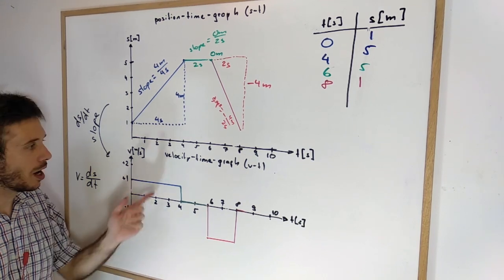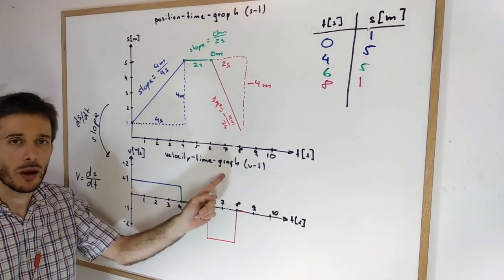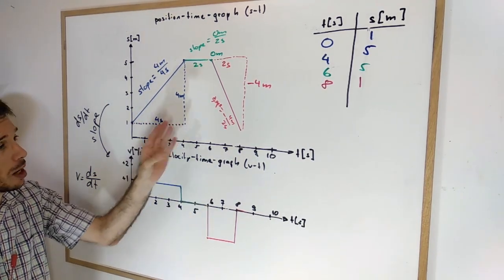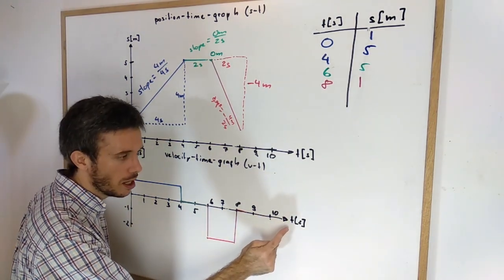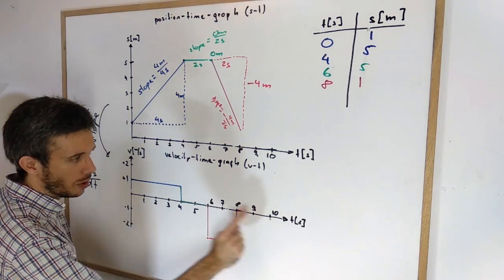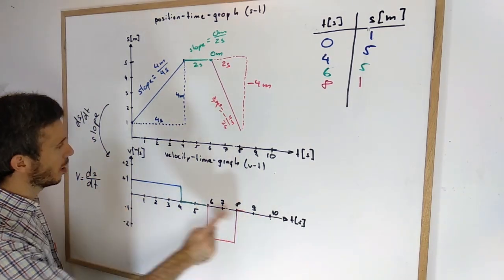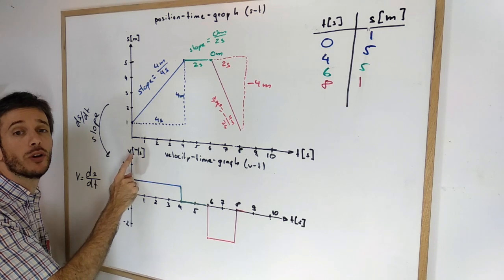Another very useful graph for kinematics is the velocity-time graph. Similar to the position-time graph, we're going to have time on the x-axis. In this case, we have time here from 0 to 10 seconds, and on the y-axis, we're going to put the velocity.